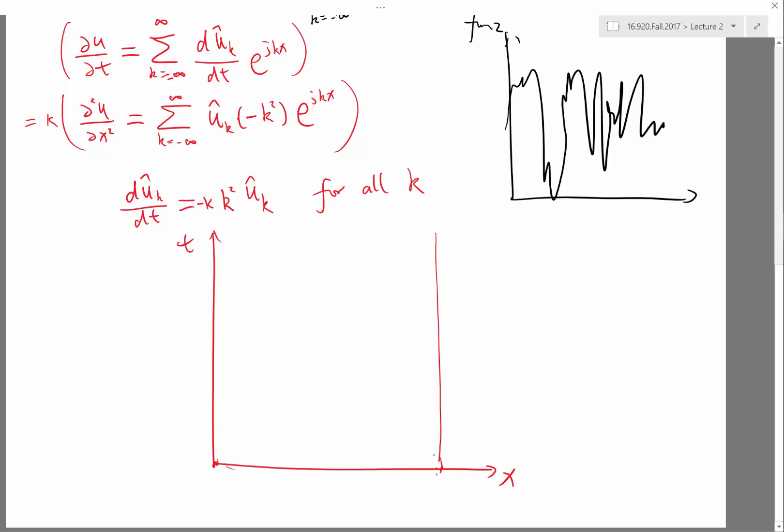So if I actually perturb the initial condition a little bit at one physical point, at one particular x or very small region in the physical domain, where would you expect the solution to be different?